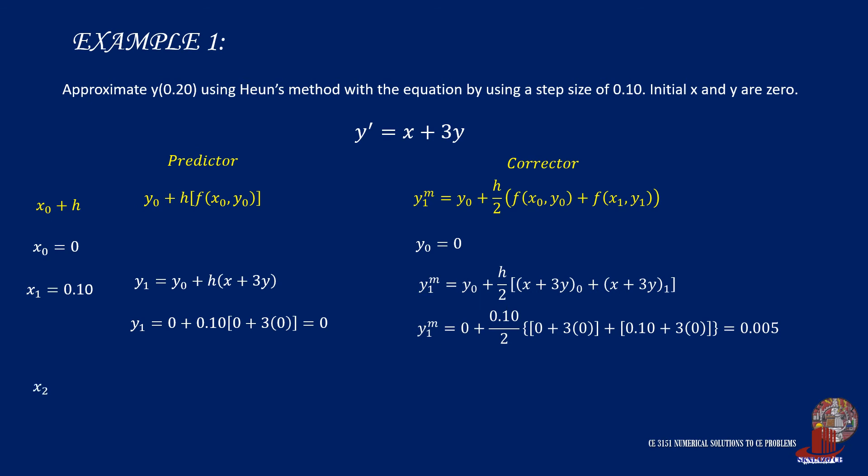Moving on to the next iteration, x2 is x1 of 0.1 plus h of 0.1, giving it a value of 0.2.